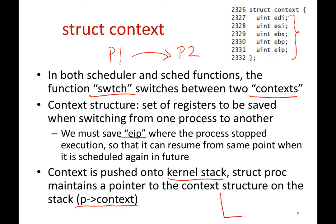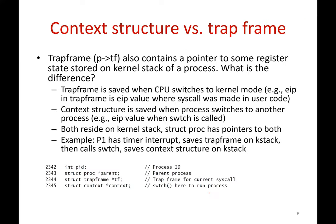On the kernel stack, this context structure is pushed, and from the PCB you maintain a pointer to it. In a previous lecture, we saw that whenever there is a trap, you save the trap frame — the trap frame also has some register state stored on the kernel stack. The context structure is a different data structure also pushed onto the kernel stack. So what is the difference between the two?